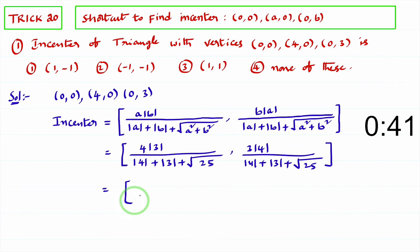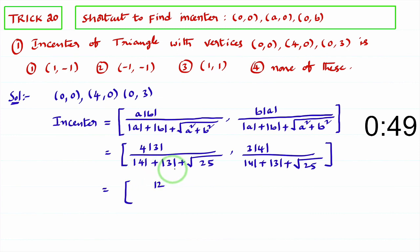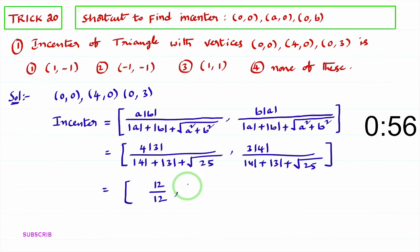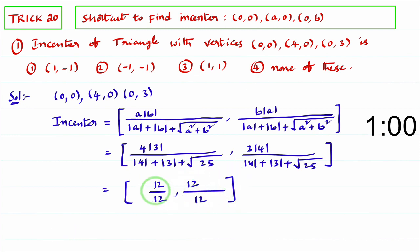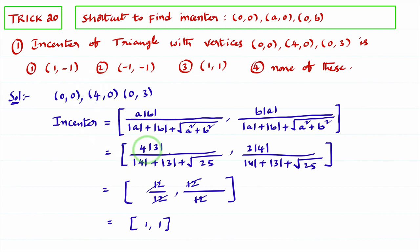4·3 = 12, divided by: |4| + |3| = 7, √25 = 5, so 7 + 5 = 12. That gives 12/12. Similarly, 3·4 = 12, divided by 12. The 12s cancel, giving 1 comma 1. So the incenter of the triangle with vertices (0,0), (4,0), (0,3) is (1, 1) — the third option is the right answer.